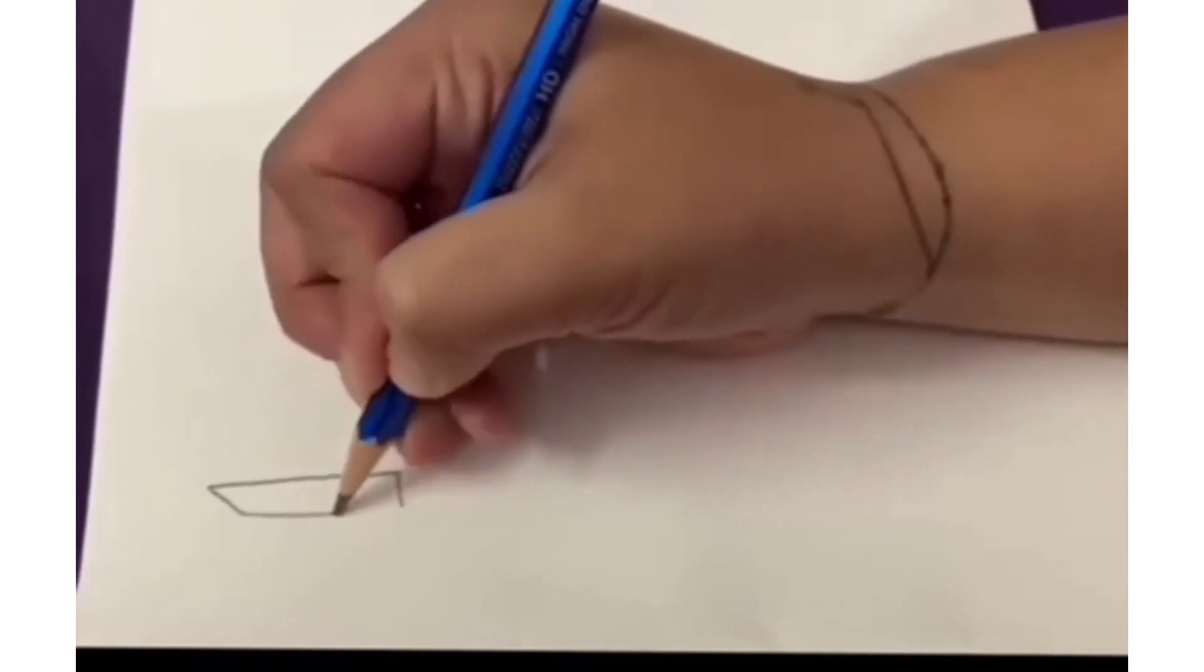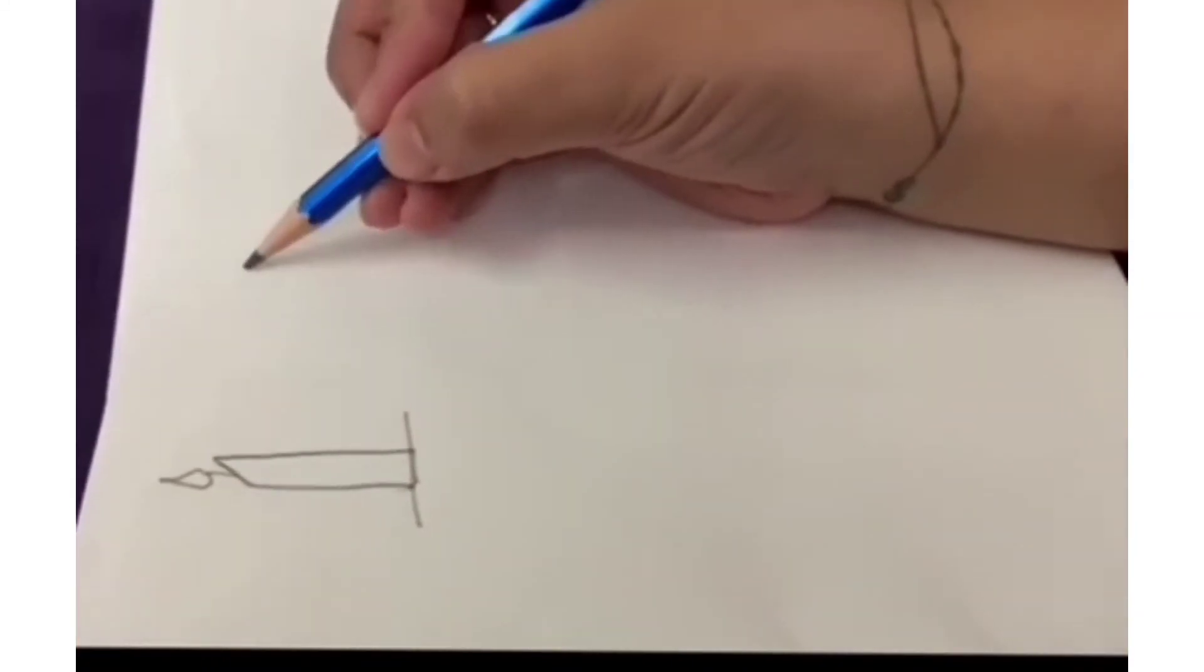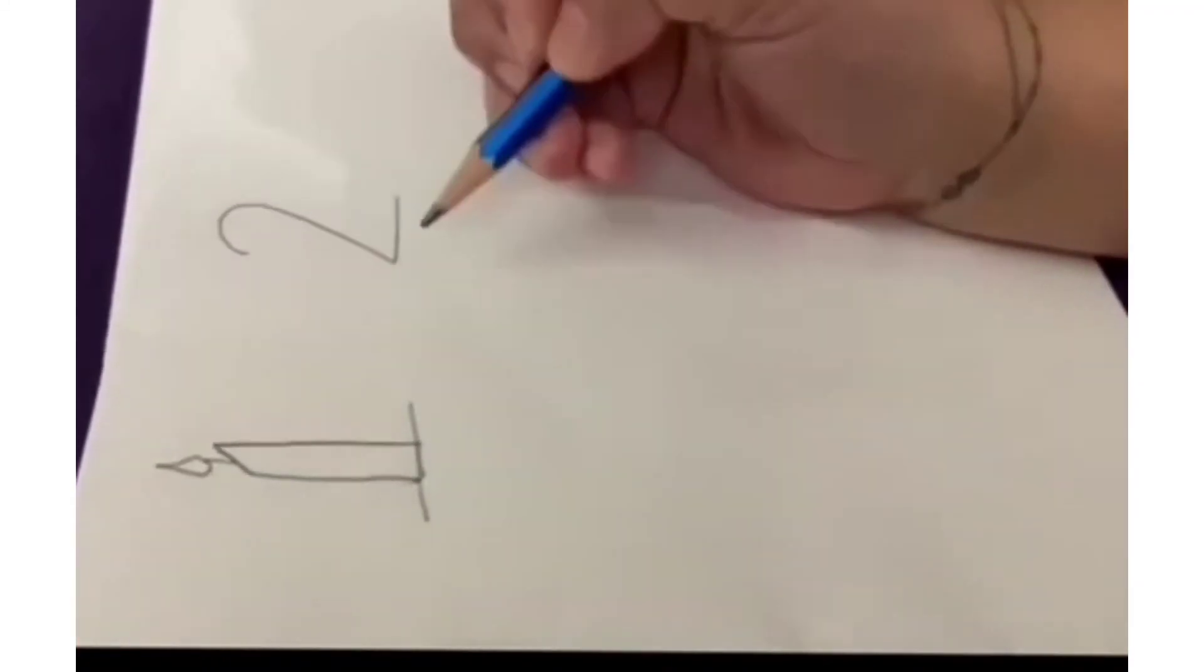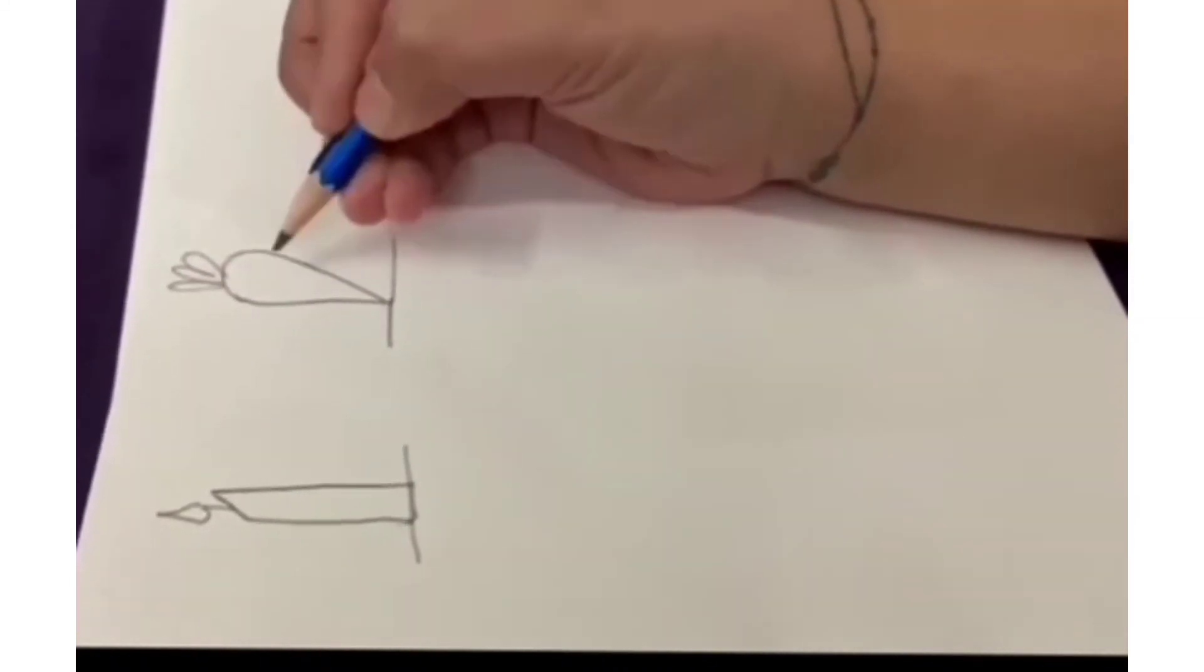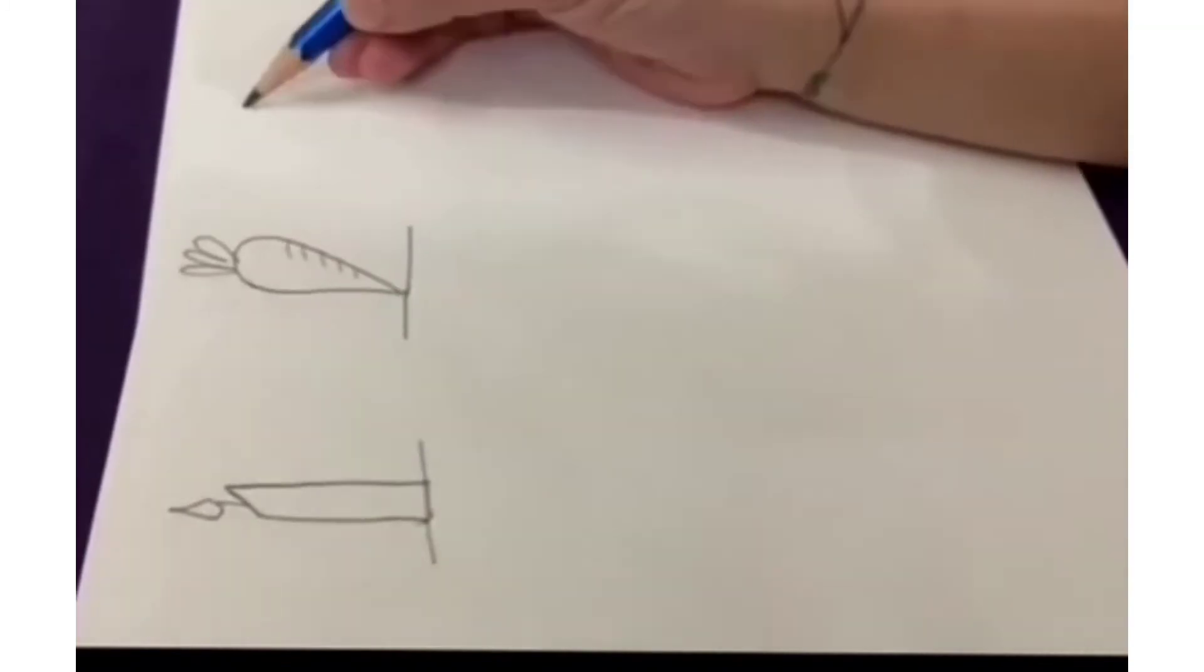See, this is number 1. Now we will make a candle out of it. This is number 2. See what I am going to draw? It's a carrot.